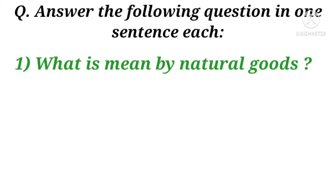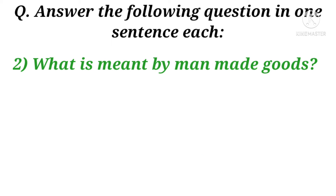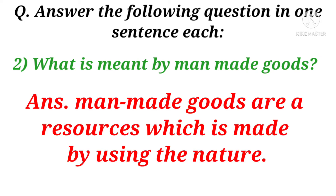Answer the following questions in one sentence each. Question 1: What is meant by natural goods? Answer: Natural goods are resources which come from nature and people can use them. Question 2: What is meant by man-made goods? Answer: Man-made goods are resources which are made by using nature.